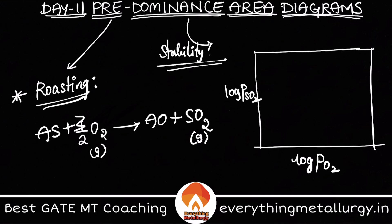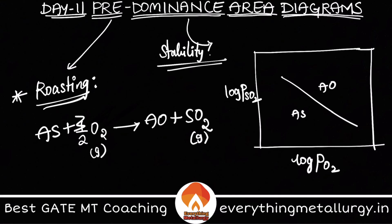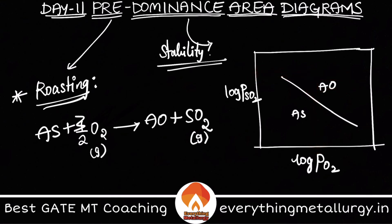So log of P(O₂) on the x-axis and log of P(SO₂) on the y-axis. Depending on this, we get some line which divides the regions into either sulfide or oxide. It lets you know that if you know the partial pressure of oxygen and partial pressure of SO₂ at a given point, you can say whether the phase is AO or AS.